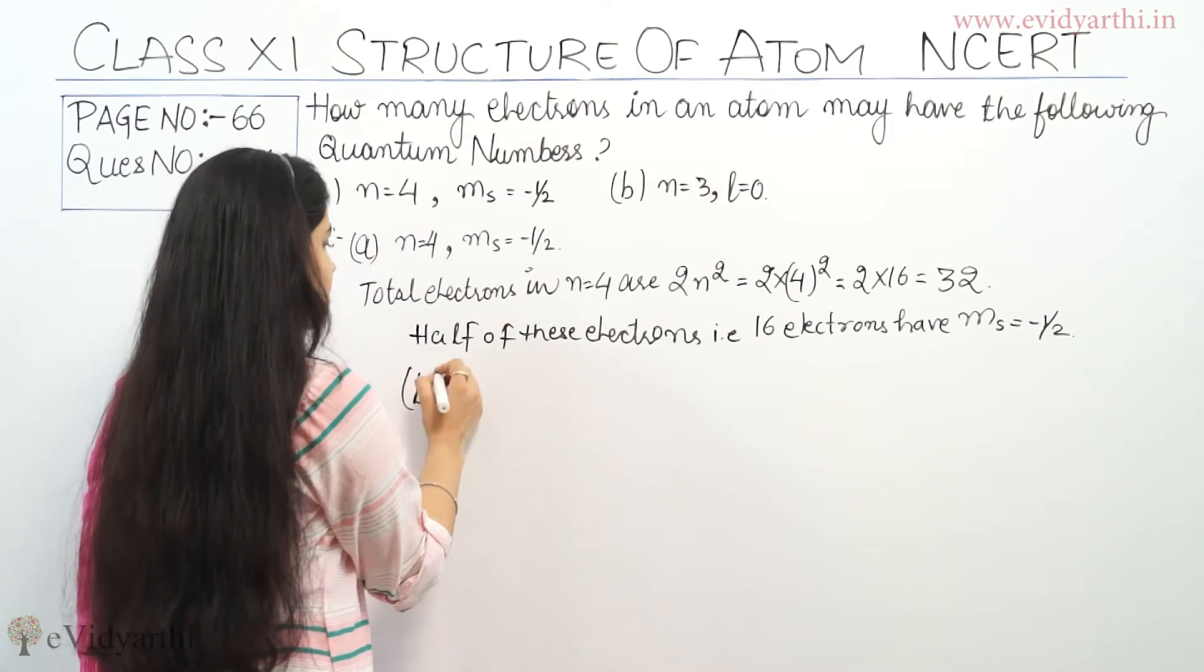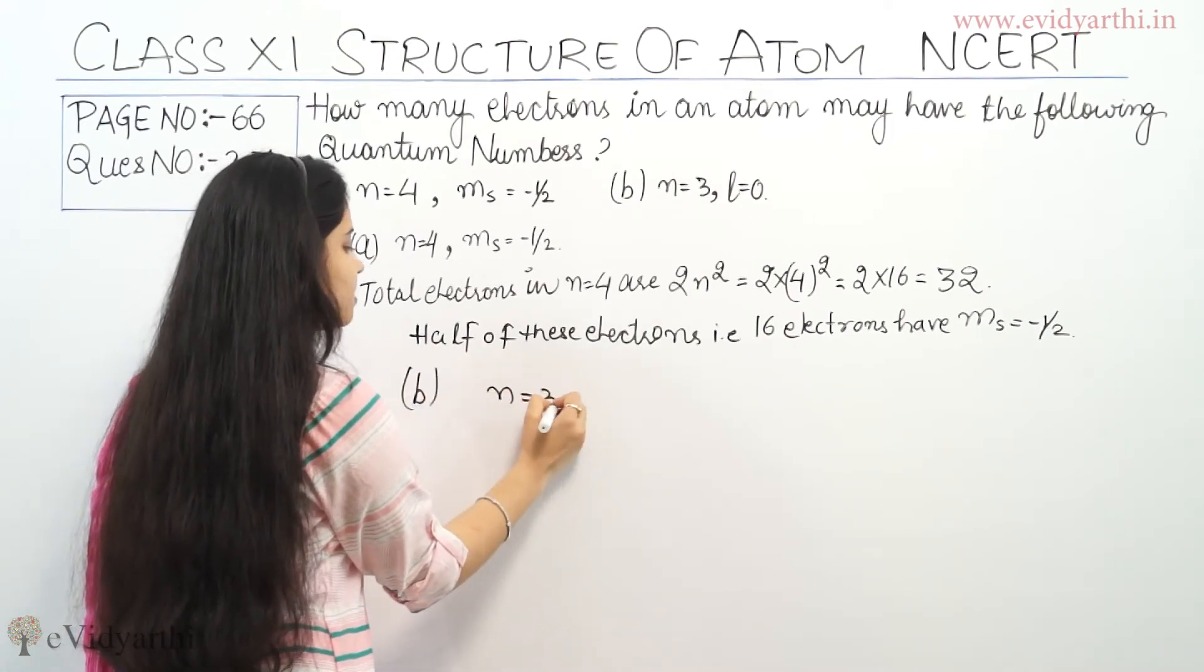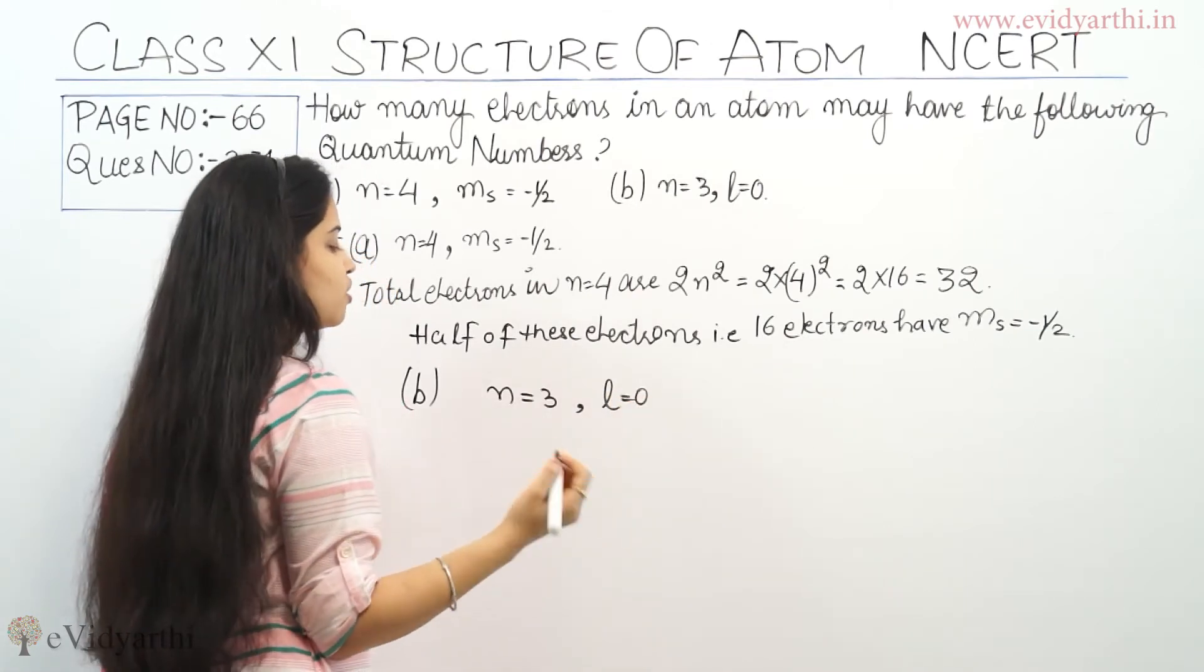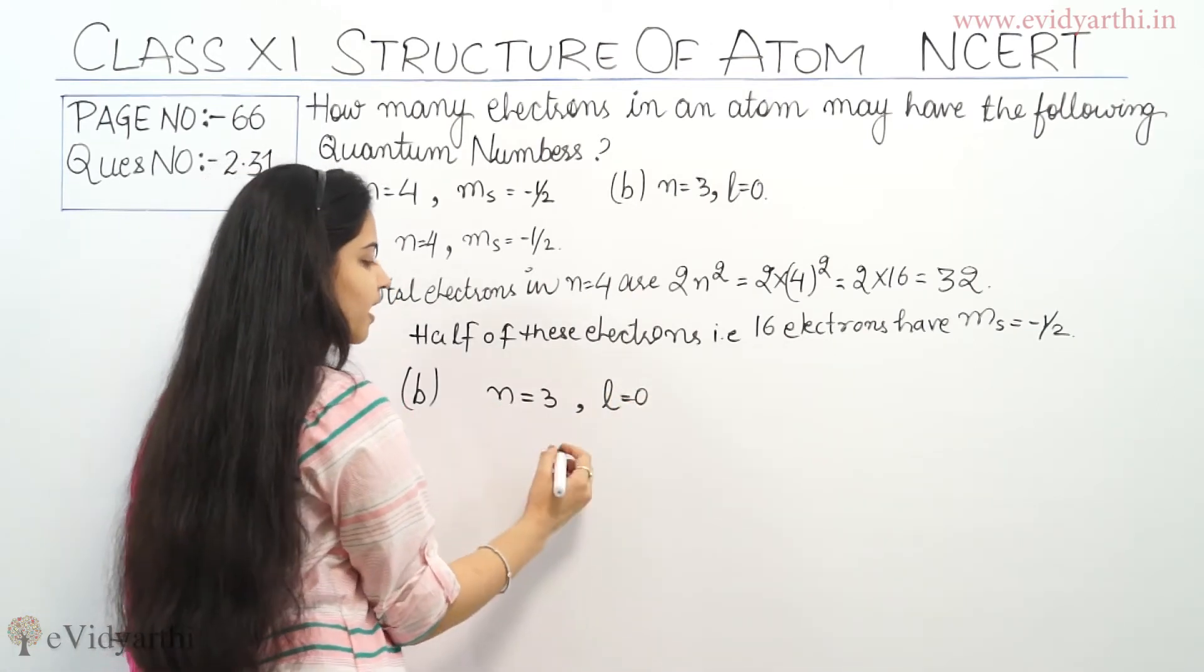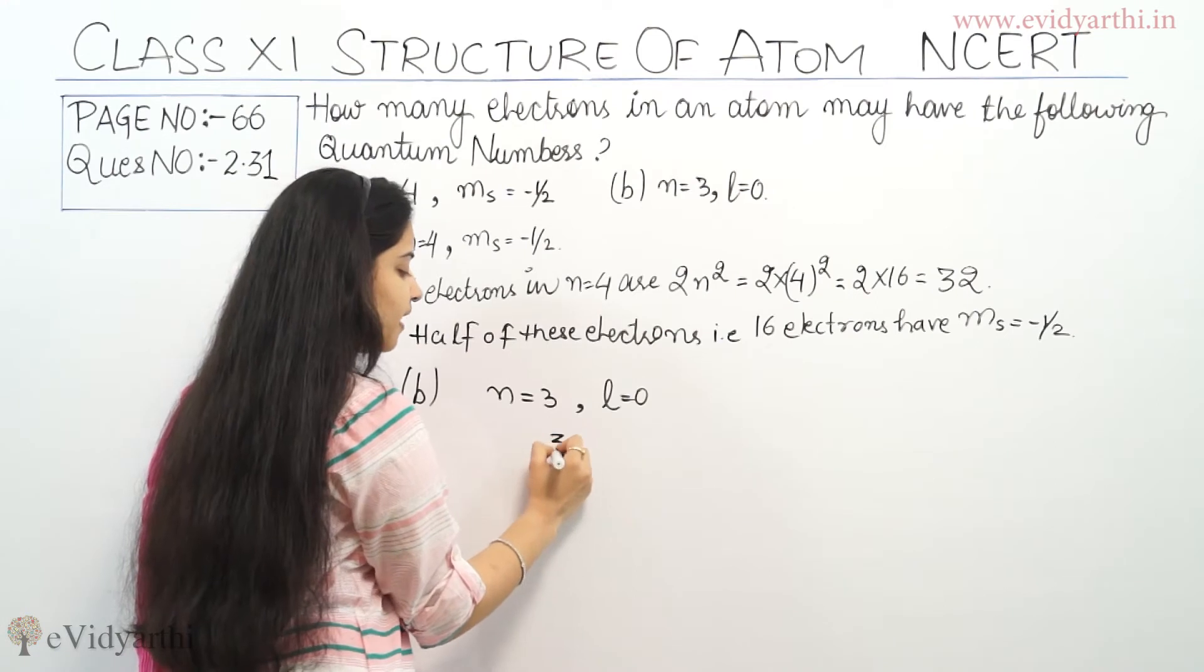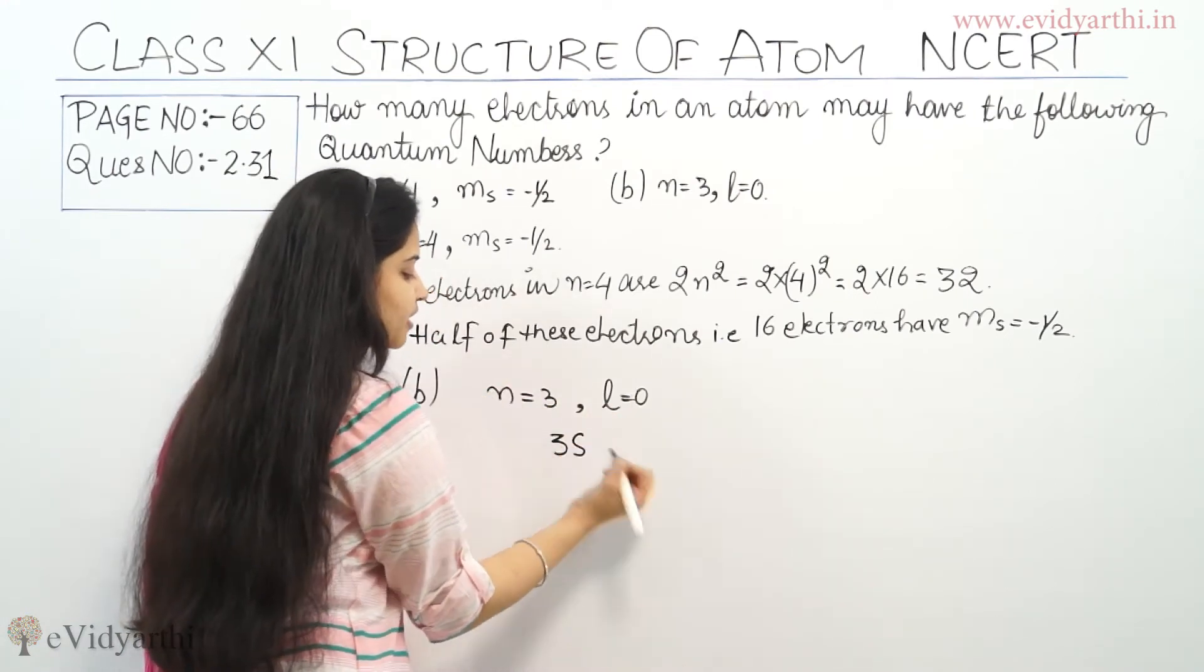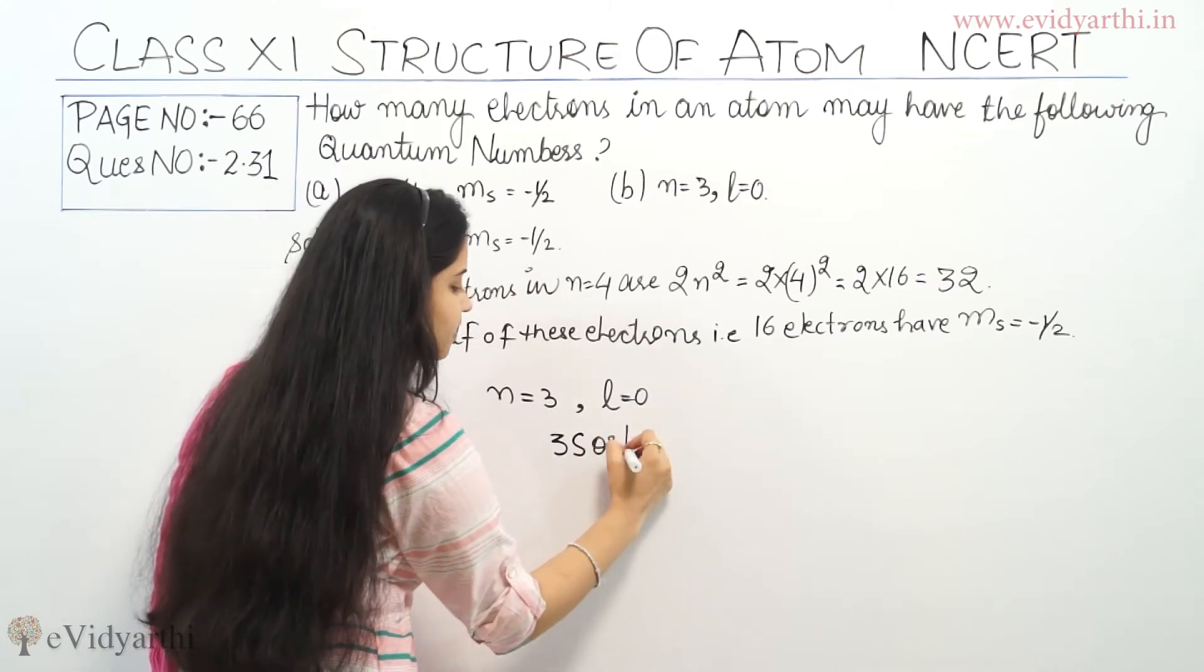Part B of this question. In 3s orbital, n is equals to 3 and l is equals to 0. So if n is equals to 3, I will be writing 3 as it is, and for l equals to 0 it is s. So it becomes 3s orbital.